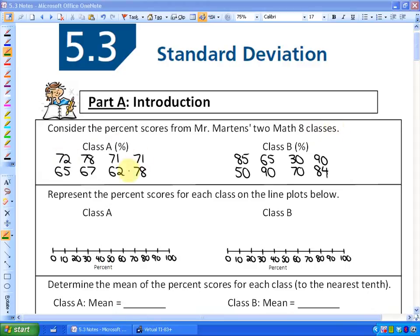Class A has eight percent scores, and class B has eight percents. It says represent the percent scores for each class on the line plots below. So let's do that. This first class: 72 is roughly here, 78, 71, 71. You'll see that they're quite clustered, 65, 67, 62, 78. So that's roughly class A.